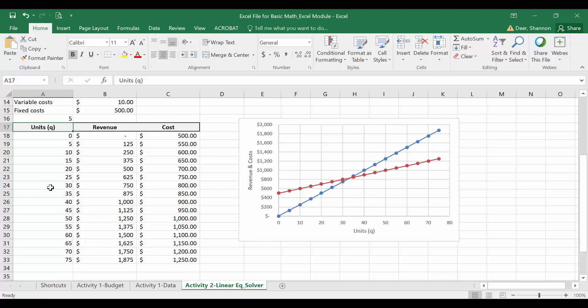With the data we have now, we can see breakeven a couple of different ways. First, in our table, we can find where revenue and cost are equal. And in this case, revenue and cost are equal somewhere between 30 and 35 units.